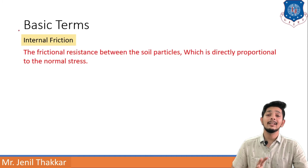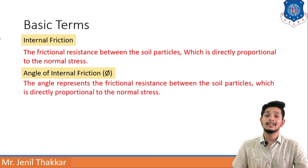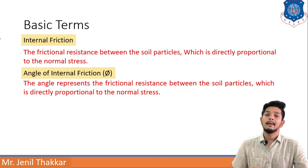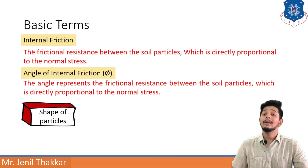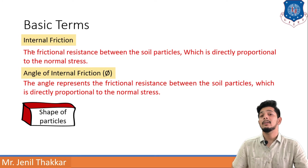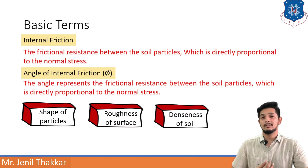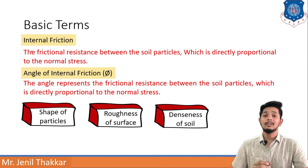Let us understand internal friction and the angle of internal friction. Internal friction is the frictional resistance between soil particles, directly proportional to normal stress. The angle representing this internal friction is called the angle of internal friction. This angle varies with the shape of particles, roughness of the surface, and denseness of the soil — whether the soil is loosely or densely packed.